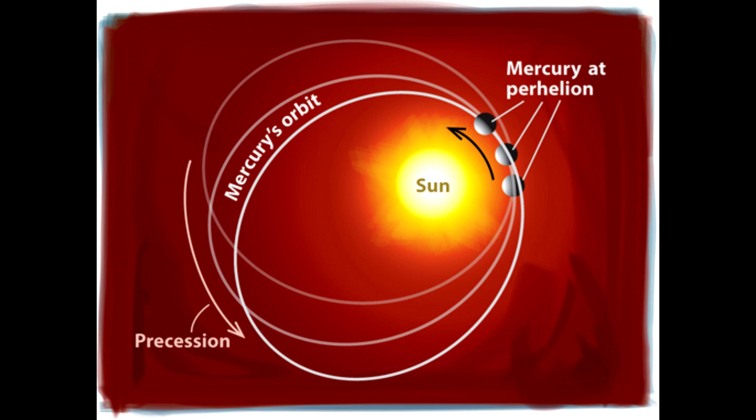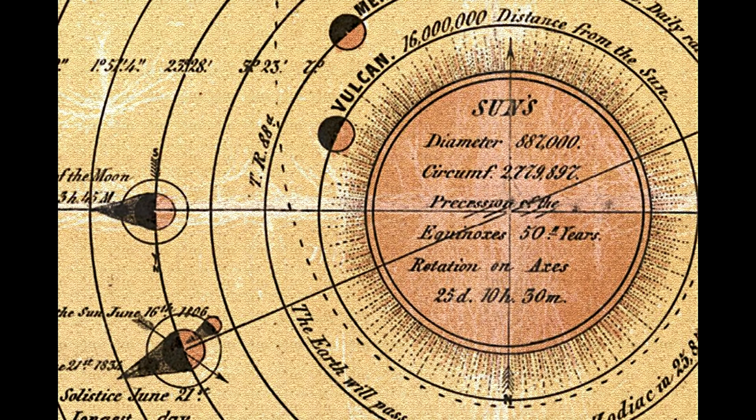Einstein's ideas worked well in explaining the anomaly in Mercury's orbit, which wasn't explained well by Newton's gravity. In fact, we had to hypothesize a ghost planet between the sun and Mercury at that time, and that contributed to general relativity being accepted because it could explain Mercury's orbit also. General relativity, however, makes a lot of predictions.